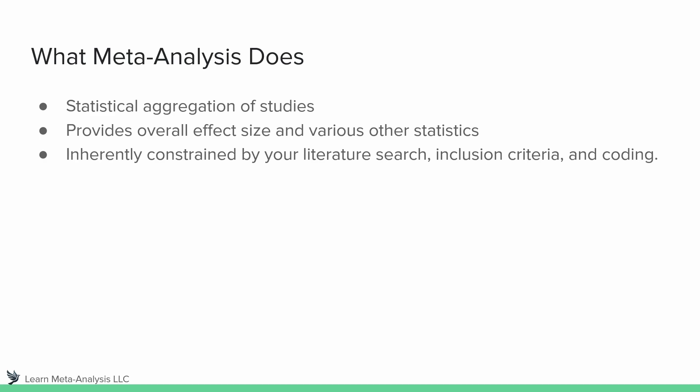Sometimes when people see meta-analysis and conceptually understand it as a statistical aggregation of studies, they think that effect size is just the definitive answer. That's true, but it's not entirely true, because you are constrained by your literature search, your inclusion criteria, and your coding. These three major factors need to be contextually relevant to interpreting the effect size. Depending on what your literature search, inclusion criteria, and data coding are, you might have something very generalizable or very narrow. We really need to be conscientious about what key terms were used, what databases we searched, and what our inclusion criteria were.